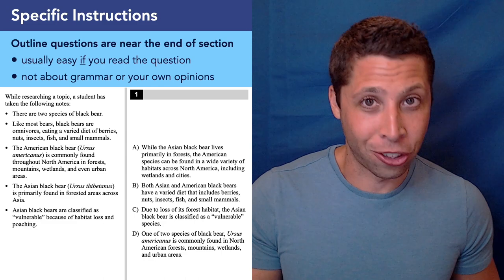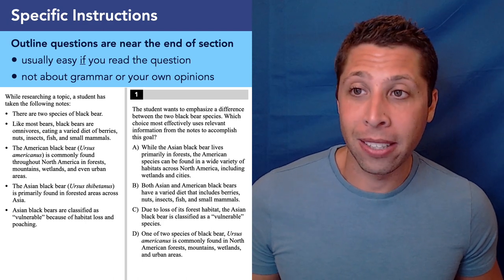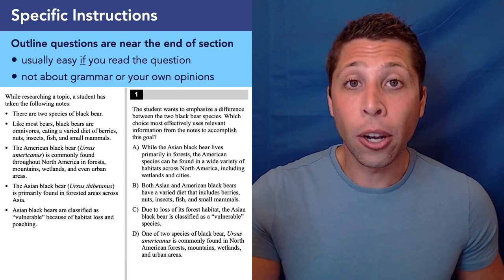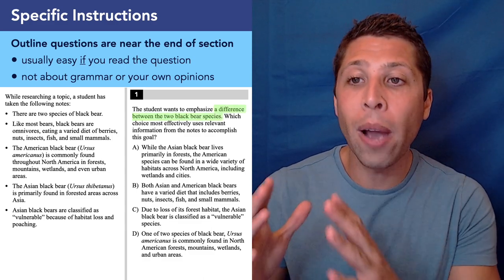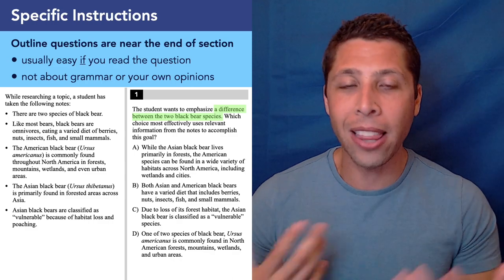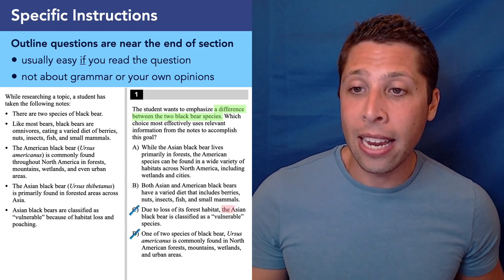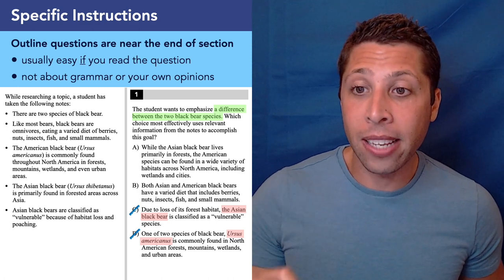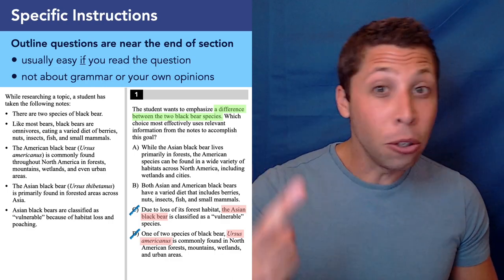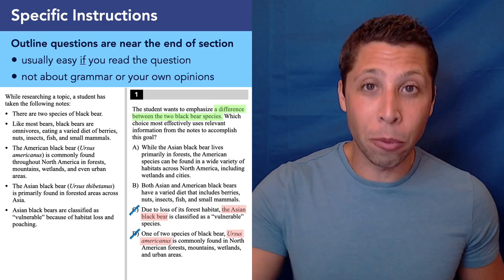So that leaves the actual question — the literal instruction. The student wants to emphasize a difference between the two black bear species. Which choice most effectively uses relevant information from the notes to accomplish this goal? Now we have a reason to look at the answer choices. The most obvious failures are C and D because they only talk about one of the bear species — C is about the Asian black bear, D is about the American black bear. If we need to talk about a difference between the two species, a choice that only mentions one species is a very clear failure.